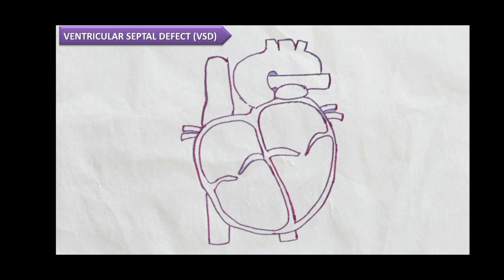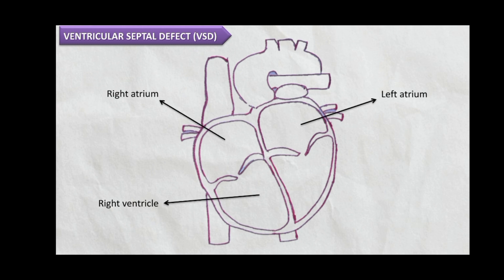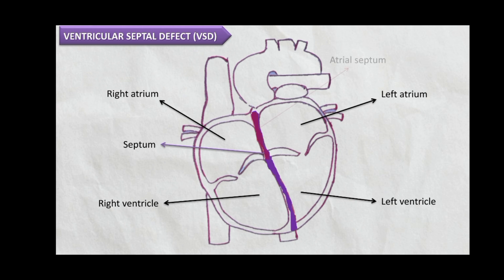When we look at the heart, we have the right and the left atria at the top and the right and the left ventricles down below. Each of these pairs is separated by a wall called the septum. The atria are separated by the atrial septum and the ventricles by the ventricular septum.